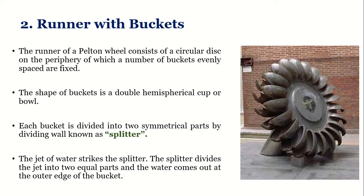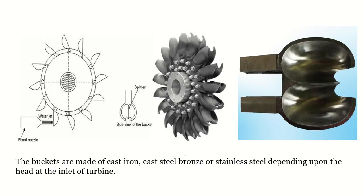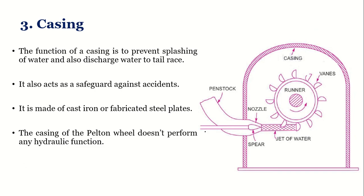Each vane is divided equally into two halves by a splitter. When water strikes the buckets, it first hits the splitter and comes out in the outward direction. You can see in the figure how the water from the nozzle strikes the vanes, causing the runner to rotate. The water strikes the splitter, moves outward, and exits in this manner. These vanes are generally made up of cast iron or stainless steel, depending on the conditions at the inlet.